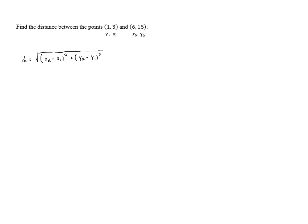Now all we have to do here is plug in those values and do the calculations. So this distance is going to end up being the square root of (6 minus 1) squared plus (15 minus 3) squared.